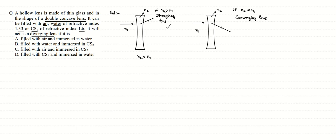In the first case, it is filled with air and immersed in water. So inside is air and outside is water, meaning n2 equals 1 (air) and n1 equals 1.33 (water). So n2 is less than n1, which means this won't act as a diverging lens — it will act as a converging lens.